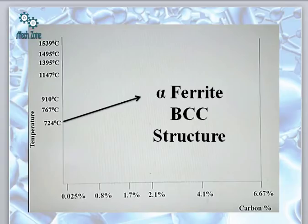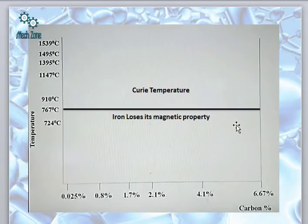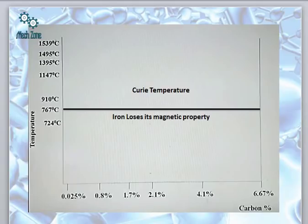This temperature of 767 degrees is called the Curie temperature. It is named after Marie Curie, who won the Nobel Prize both in chemistry and in physics. Her daughter also received the Nobel Prize, and the entire family of Marie Curie received the Nobel Prize in some field. It was observed that when iron is heated up to 767 degrees, it loses its magnetic property, and this temperature is called the Curie temperature.